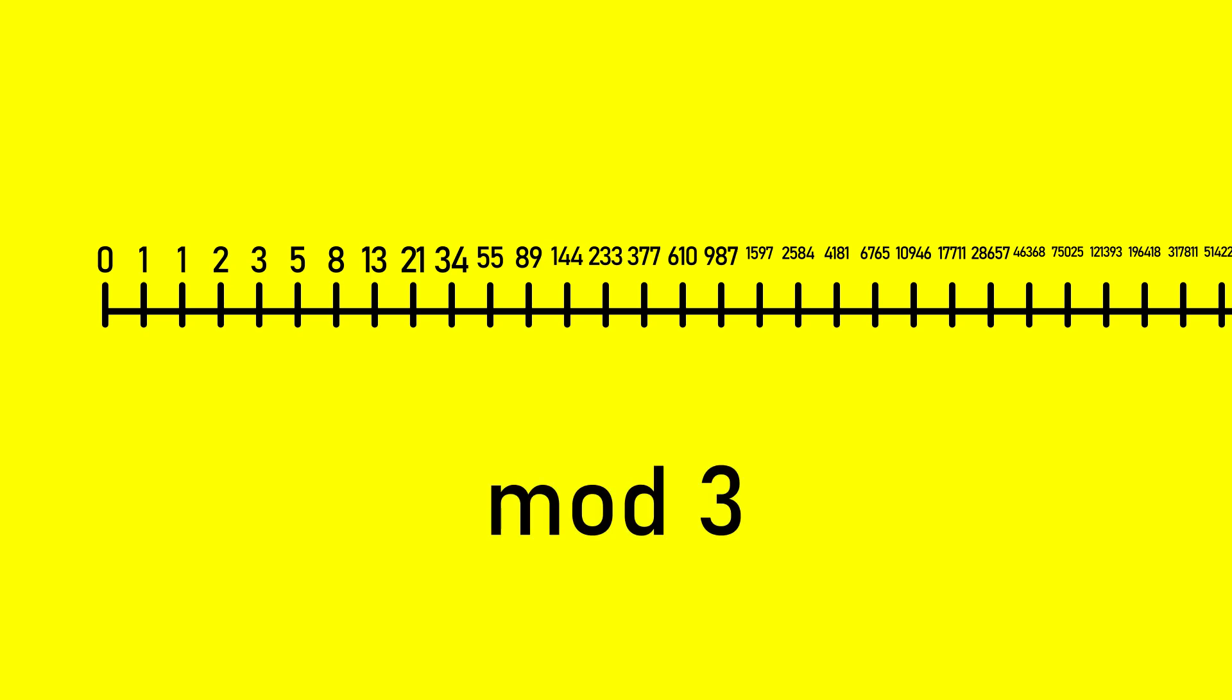Let's substitute our number line with the Fibonacci sequence and see what happens when we divide by a common modulus of three. As before, we get another repeating sequence, and this time the sequence is zero, one, one, two, zero, two, two, one.